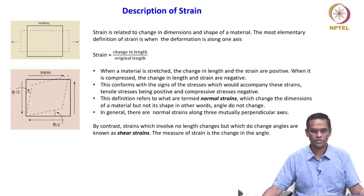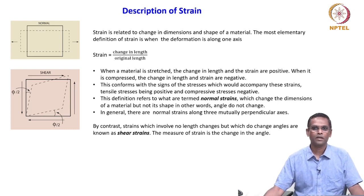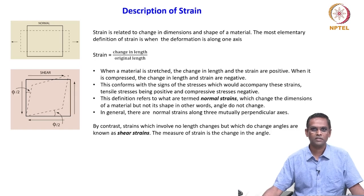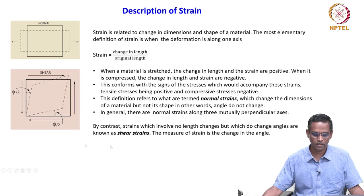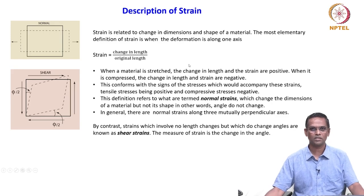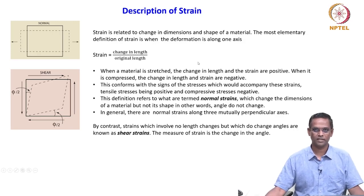Similar to stress, whatever the description we have seen, we are going to see a similar kind of description — strain at a point. We went through some normal classification of the strains, and we also looked at what is a normal strain and shear strain. It is exactly the similar terminology as we have seen in stress: normal stress and normal strain, shear stress and shear strain. Similar geometrical conditions will be considered here as well.